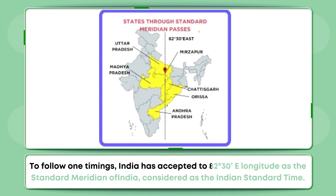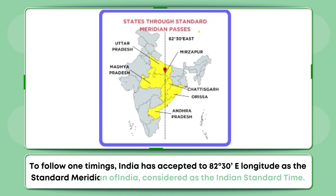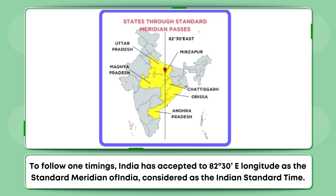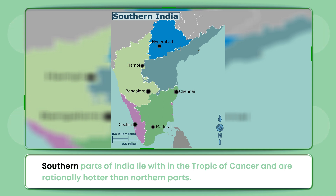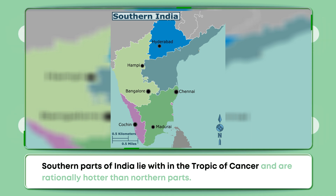India has accepted 82 degrees 30 longitude as the standard meridian of India, considered as the Indian Standard Time. Southern parts of India lie within the Tropic of Cancer and are relatively hotter than the northern parts.